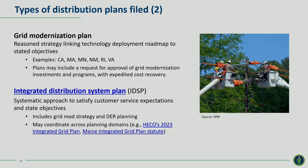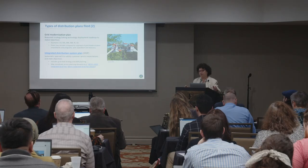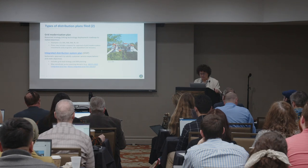Several states require or allow utilities to voluntarily submit grid modernization plans. Some utilities are filing these plans absent any law because they'd like some indication from the commission that major grid modernization investments might have a hope of getting cost recovery. These plans typically present a grid modernization strategy linking a proposed technology roadmap to stated objectives — and I mean state objectives — it's really important that this planning process be objective-based. These plans typically enable expedited cost recovery for capital investments and programs, though the commission can always say no.